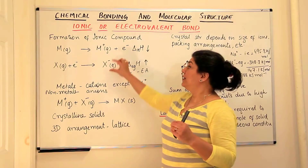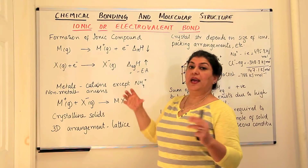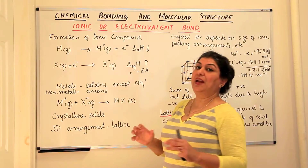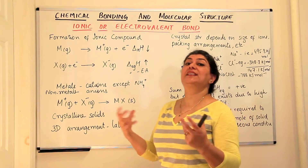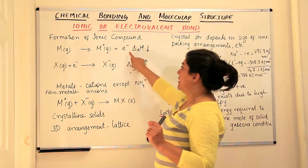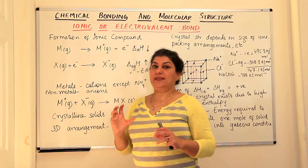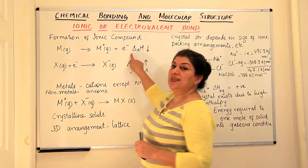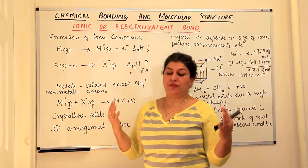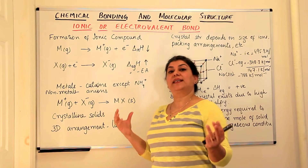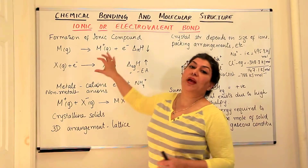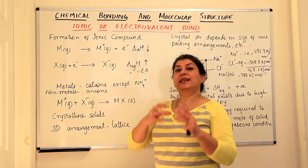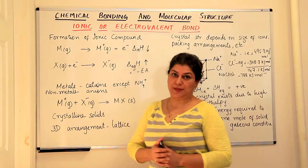If the anion acquires its octet, then the electron gain enthalpy can have a negative value. These enthalpies can have positive or negative values. The ionization enthalpy is always positive. A positive enthalpy means that energy has to be given to carry out that change, and a negative enthalpy means that energy is given out by the system.